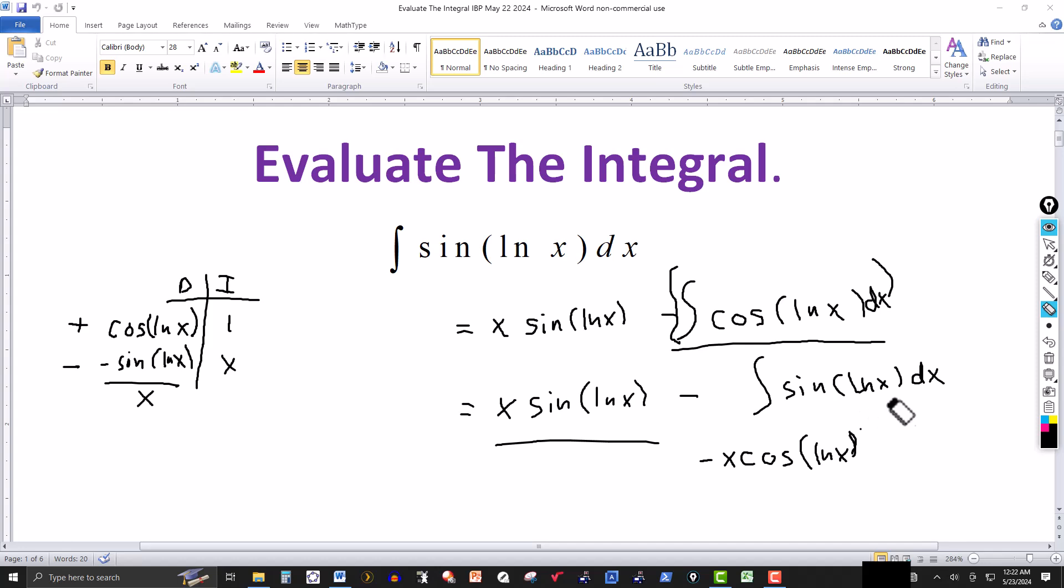So now what we do is bring this or add this to both sides. You have it here, there, and here. So when you add it to this side, it cancels that part right there. So to find the final answer to this, we added this integral to both sides here. Cancels over here. Add it over here. So this becomes twice the integral of sine ln of x dx.